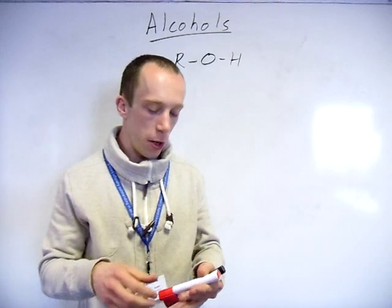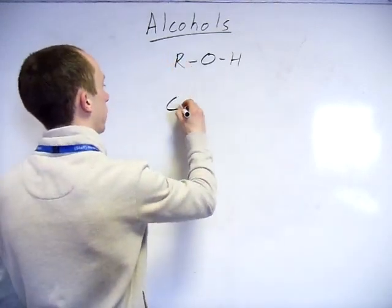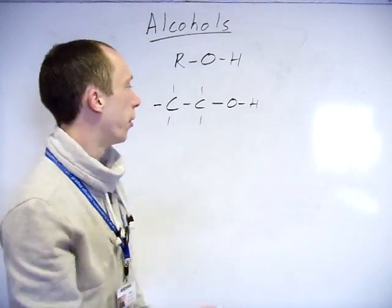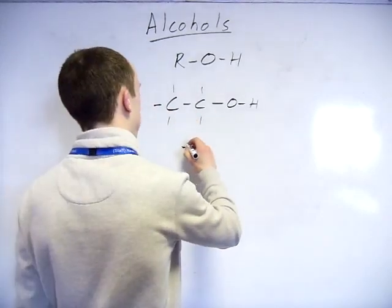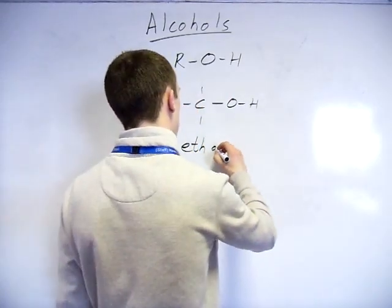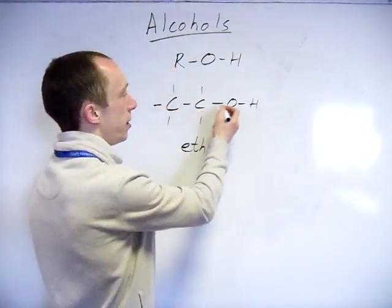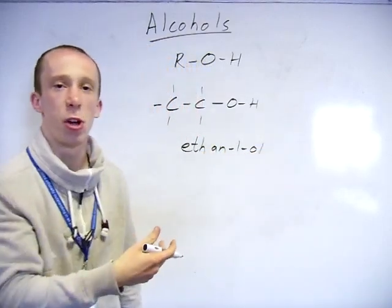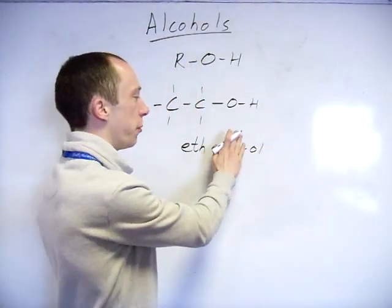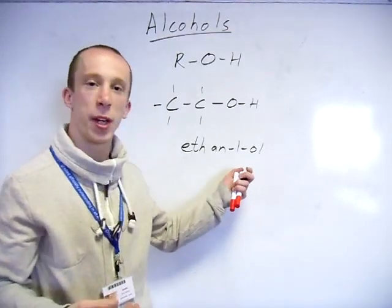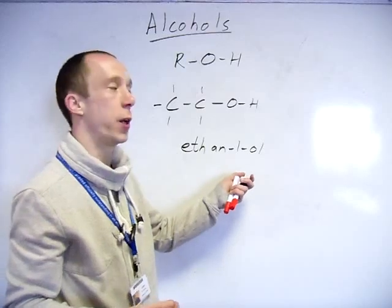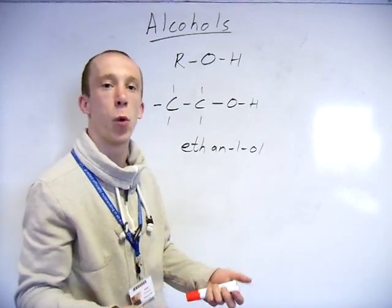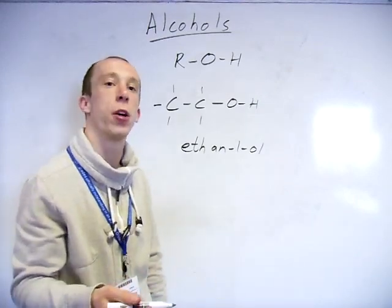We'll start off with some basic naming. Count your longest carbon chain first. They're single bonded to each other, so ethanol. We give this carbon number one. With ethanol it can only take the number one, but get in the habit of showing the number for where the alcohol group is stuck, because if you had propanol, you would need to say propane 1-ol or propane 2-ol since it could be on carbon 1 or carbon 2.